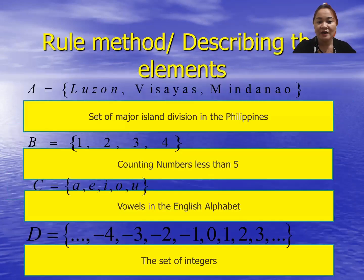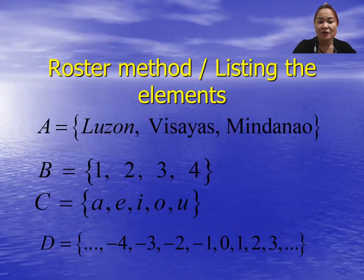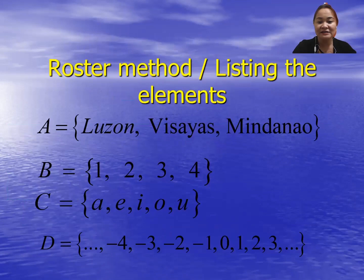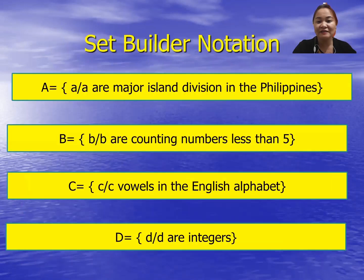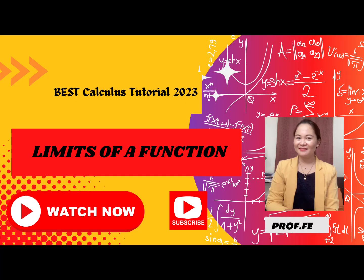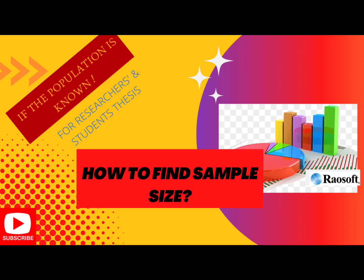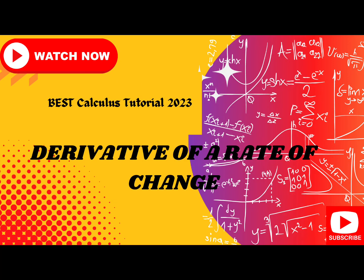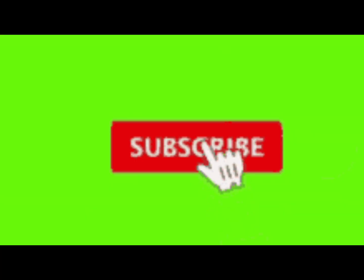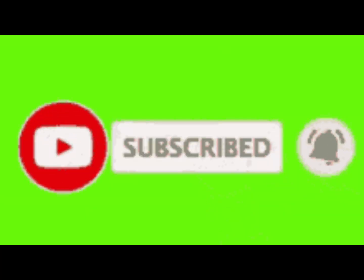So again, we have the roster method — listing the elements; the rule method — describing the elements; and the set builder notation. We hope that you found this video helpful. If you have any questions, please leave them in the comments below. You can recommend a topic to discuss in the future. Please watch my other math tutorials and don't forget to subscribe to my channel.